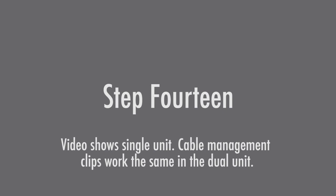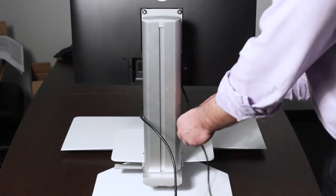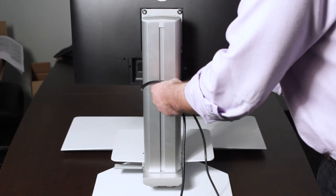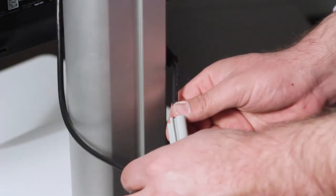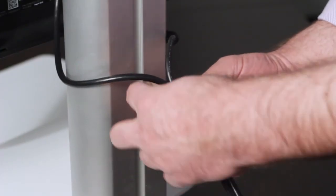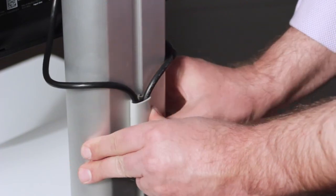Step 14. Align cables from monitor along the crossbar, insert cables into the small cable management clips and clip the small cable management clips into the channel of the crossbar.